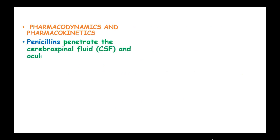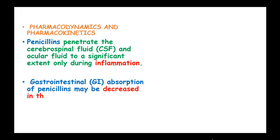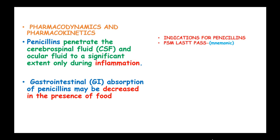Pharmacodynamics and pharmacokinetics of penicillins. Penicillins penetrate the cerebrospinal fluid and ocular fluid to a significant extent only during inflammation, but normally they do not cross the blood-brain barrier. Gastrointestinal absorption of penicillin may be decreased in the presence of food.